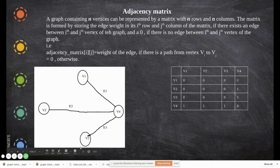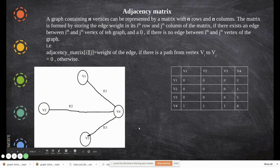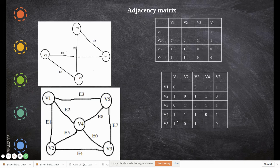For example, v1 to v4 we have edge e1, so that entry is 1; all other v1 connections are zero. For v2: only v2 to v4 has an edge; all others are zero. For v3: only v3 to v4; all others are zero. For v4: it has connections with v1, v2, and v3. You can represent the same graphs with adjacency matrix — rows and columns are both vertices, and you check edge existence between each pair.